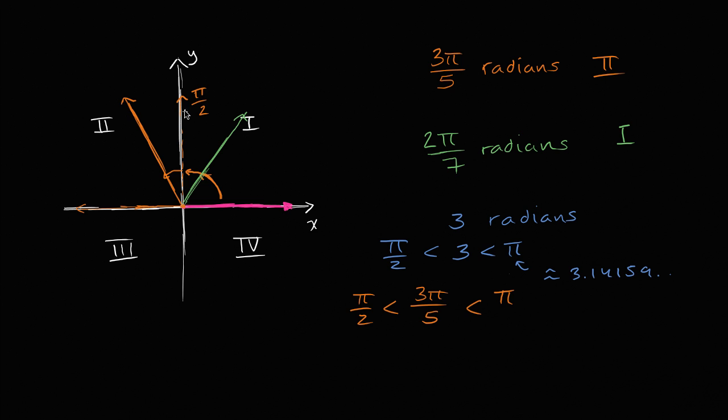So it's going to be between pi over two and pi. So if we start with this magenta ray and we rotate counterclockwise by three radians, we are going to get, it's going to look something, it's going to be something like this. But for the sake of this exercise, we have gotten ourselves, once again, into the second quadrant.